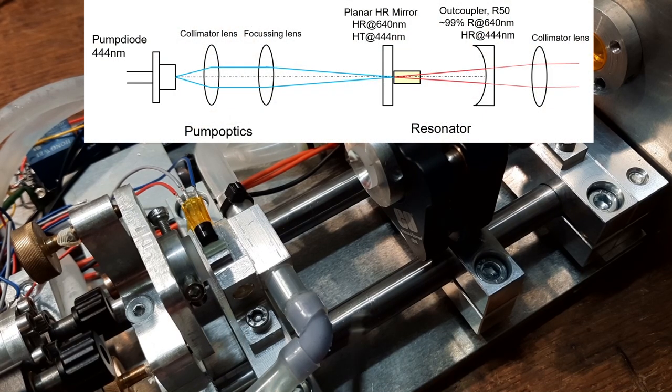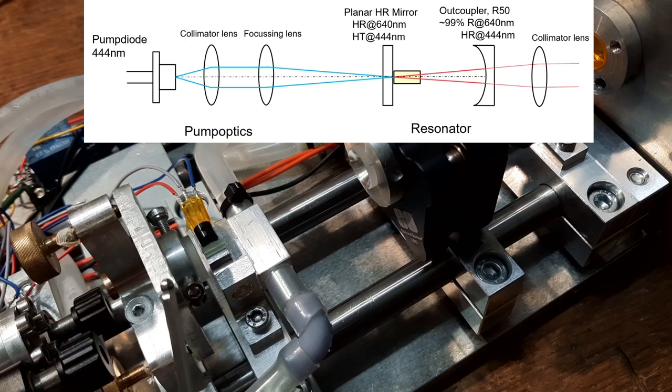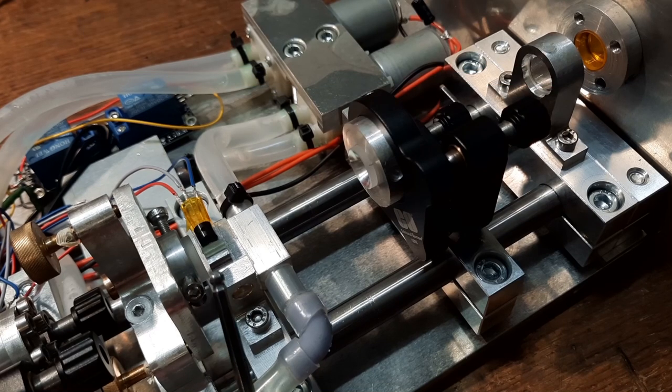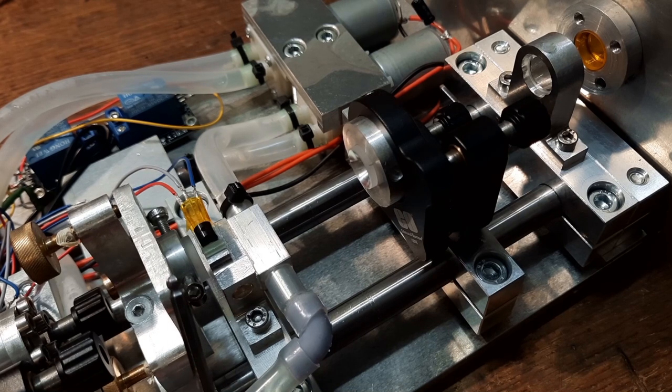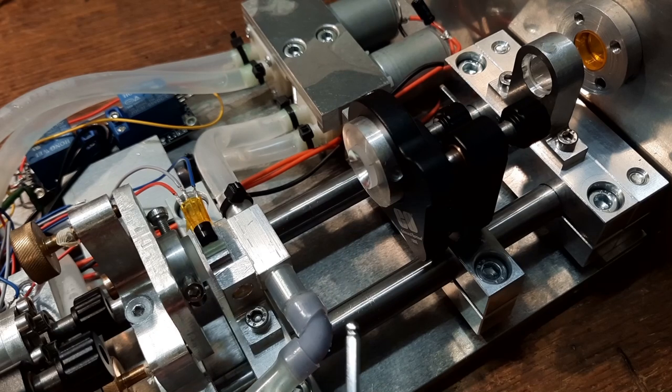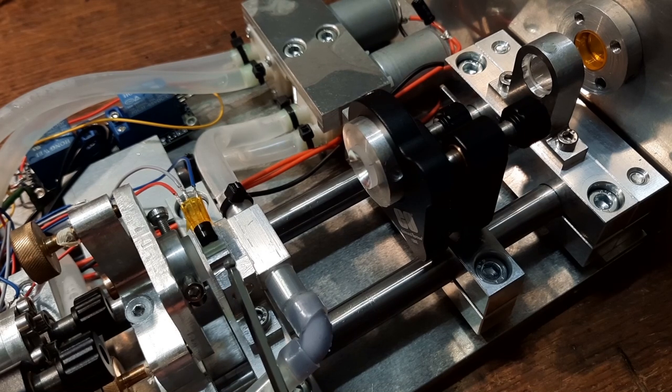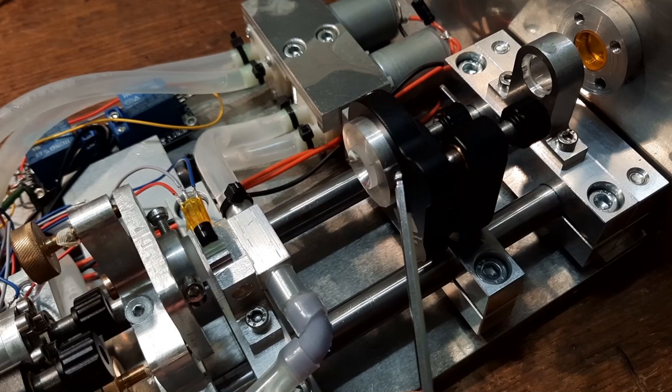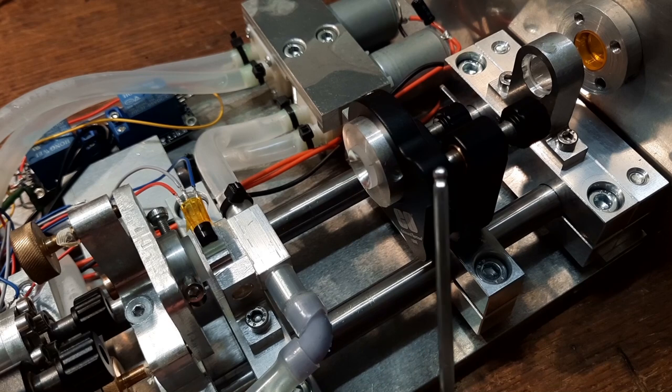We've got a classical hemispheric resonator. So we've got a plane mirror and a concave mirror. Now this mirror, of course, is coated in such a way that the pump beam can transmit through it and focus into the crystal, as I said. And it's highly reflective for the laser wavelength, which is about 640 nanometers in this case. But it's also quite reflective for 607 nanometers, which is orange and which I'll show you later on.